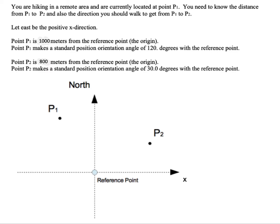It says you're going to hike in a remote area and you're located at point P1. You need to know the distance from P1 to P2 and also the direction that you should walk to get from P1 to P2.